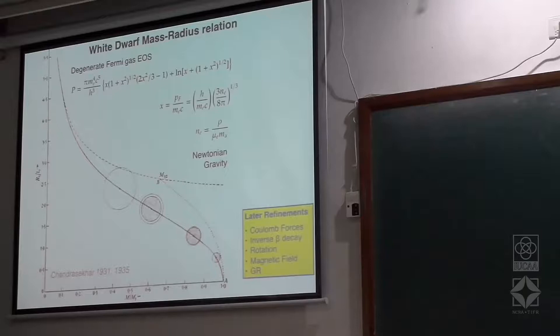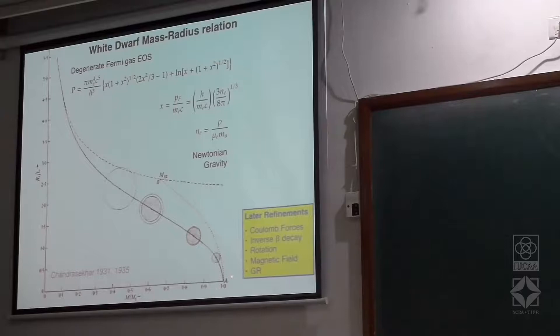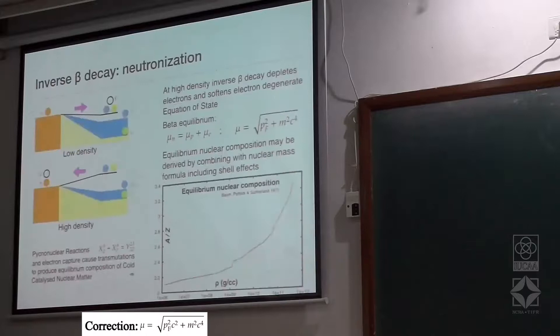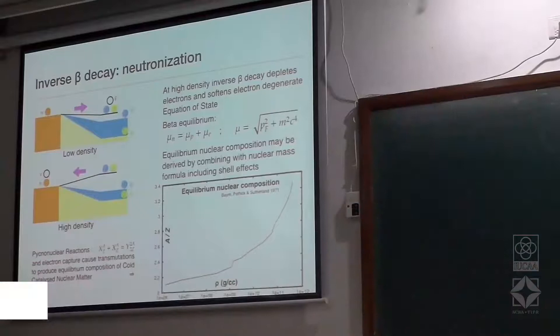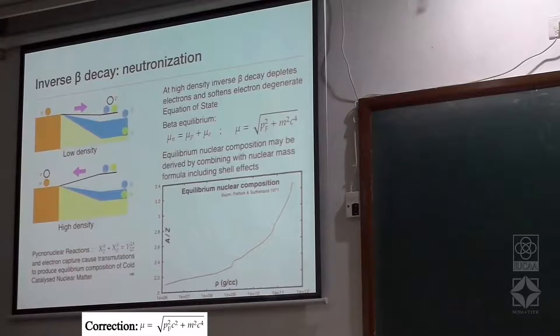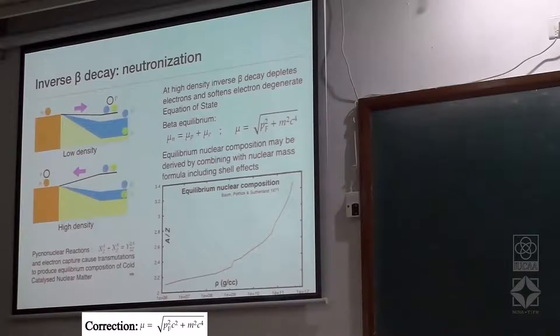The question is whether support is available at a different density to support configurations of this mass. All configurations of mass 1.4 solar masses or larger will have to find final equilibrium somewhere else. As the collapse proceeds, you still have this mixture of neutrons, protons, and electrons. Since the volume is decreasing, number density of all species increases, including the number density of electrons.